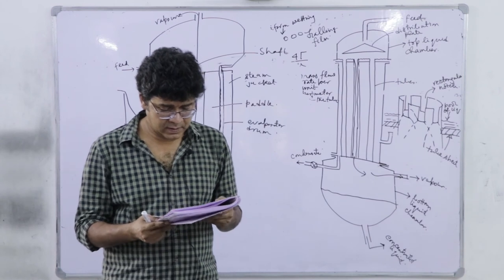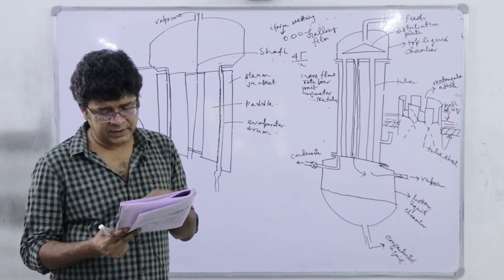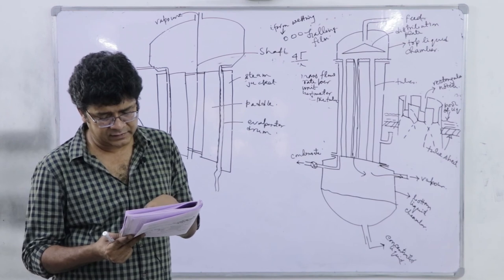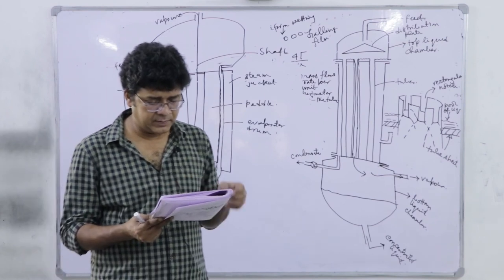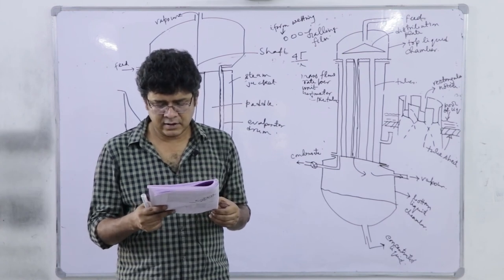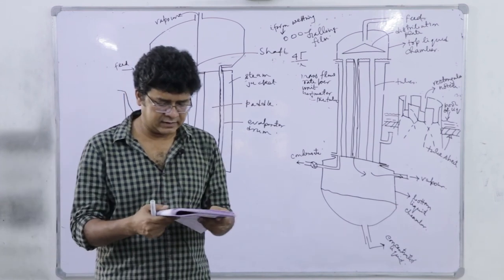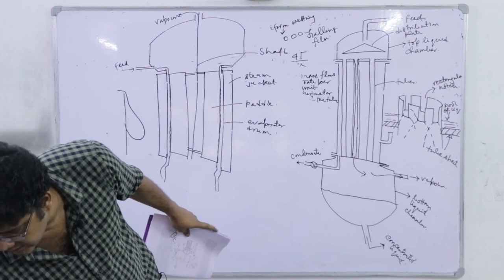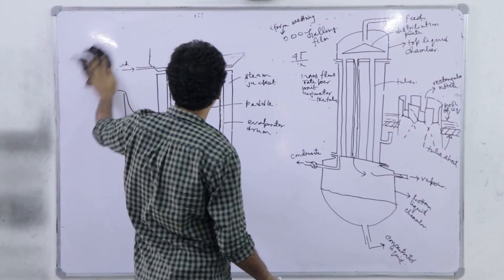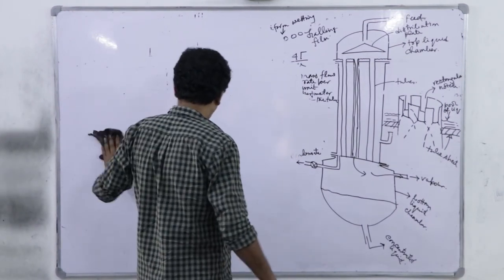Typical materials treated in agitated surface evaporators include tomato paste, candies, beer malt, meat extract, tannin extract, gelatin, and water-soluble polymers. The disadvantage is high capital and operating cost due to the moving internal parts (the rotating paddle).